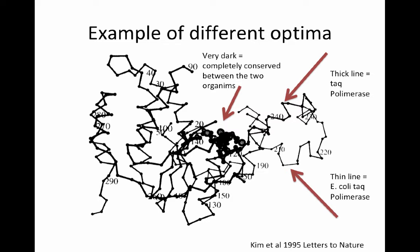The thin line represents Taq polymerase from E. coli — our lab rat of microbes. For the most part the thick and thin lines overlay each other, but there's one area to the right where they separate, showing that the folding or structure of these proteins differs slightly in one place. You can also see that the active site is mostly but not completely the same between the two enzymes — both polymerize DNA — and that small difference completely determines their temperature optima.